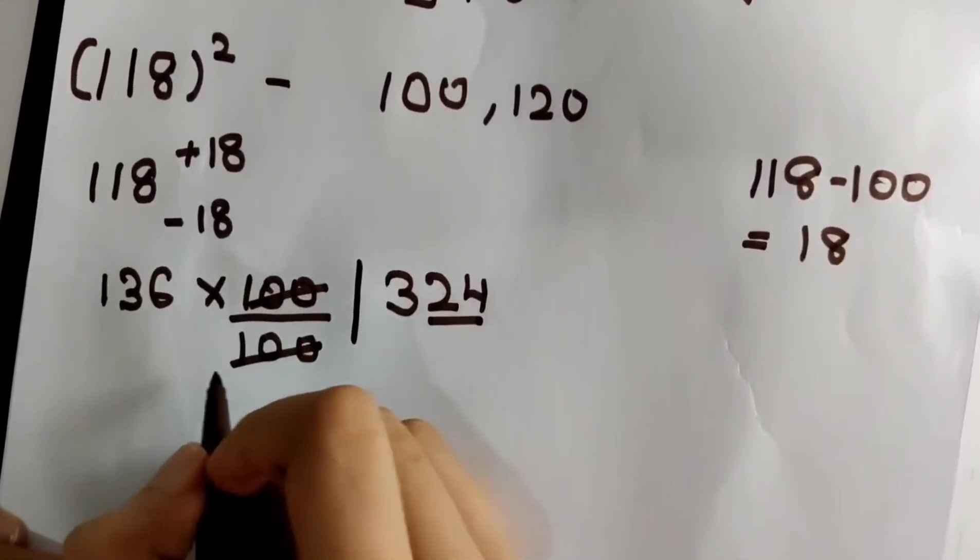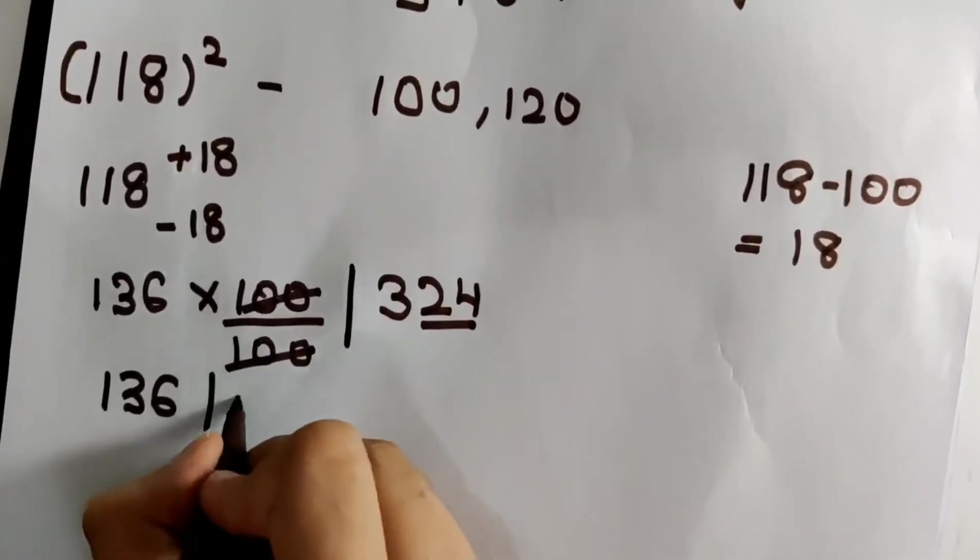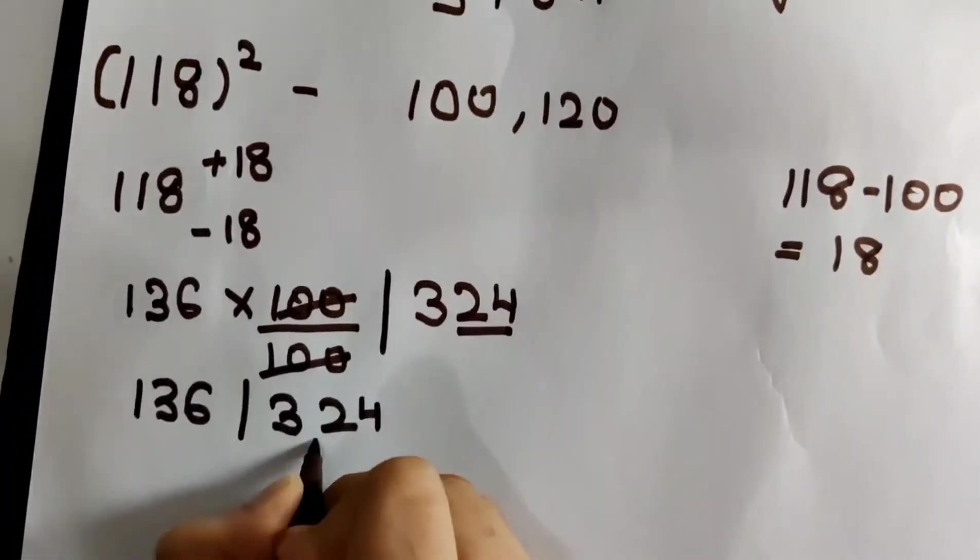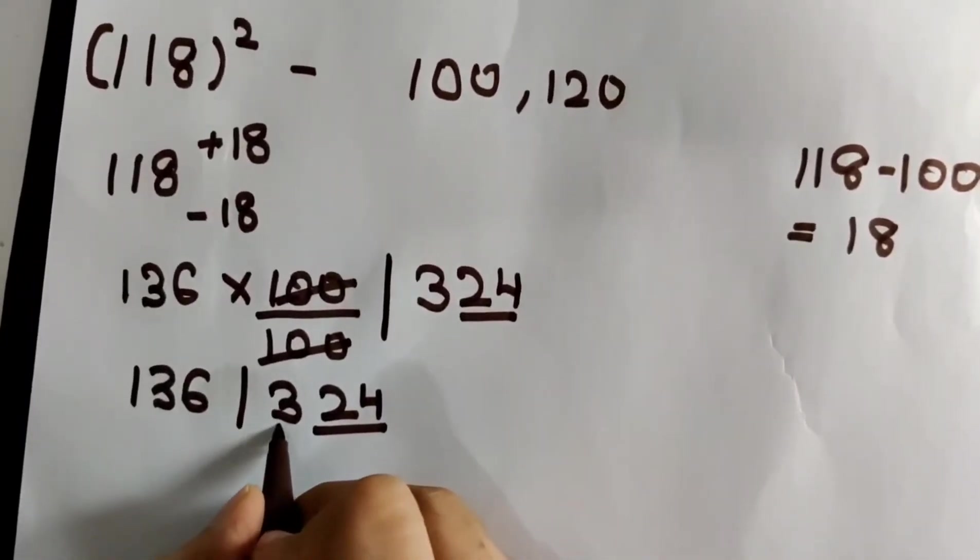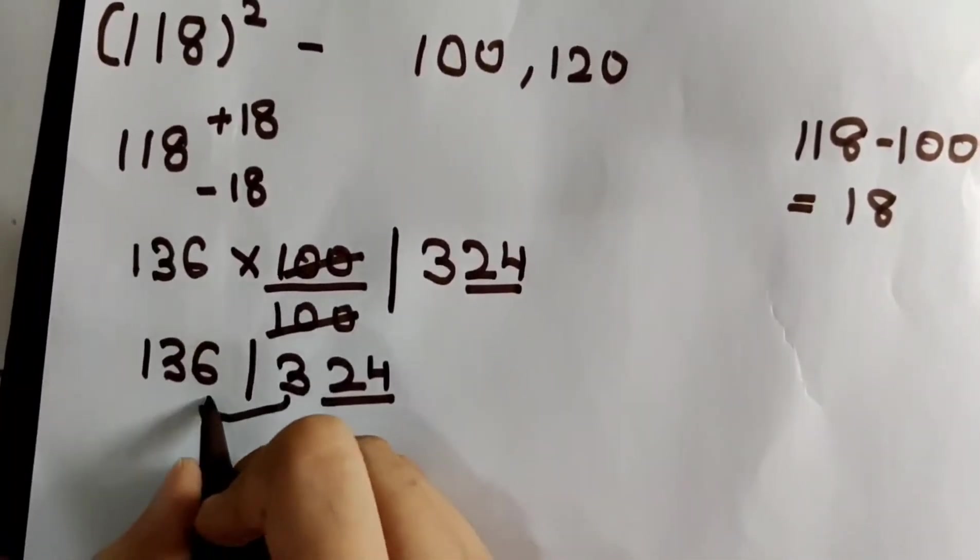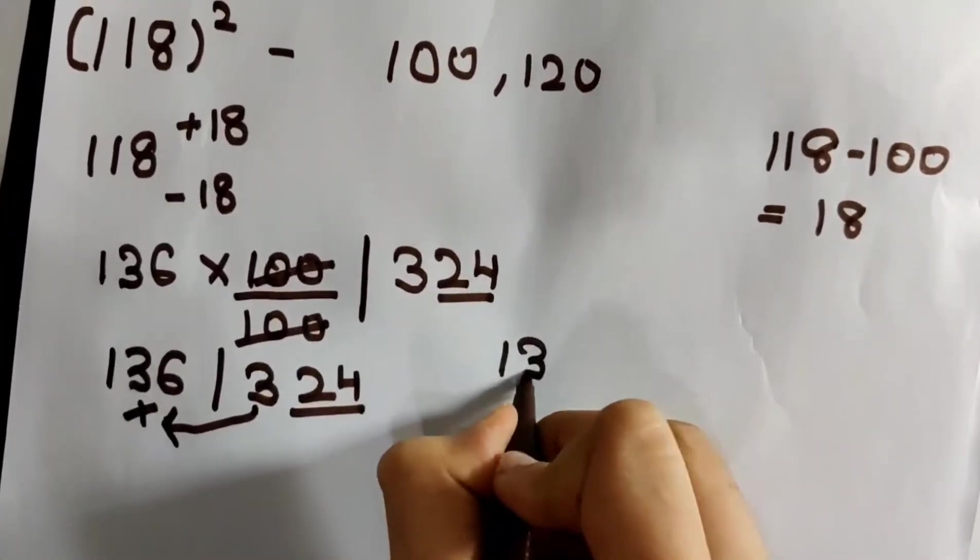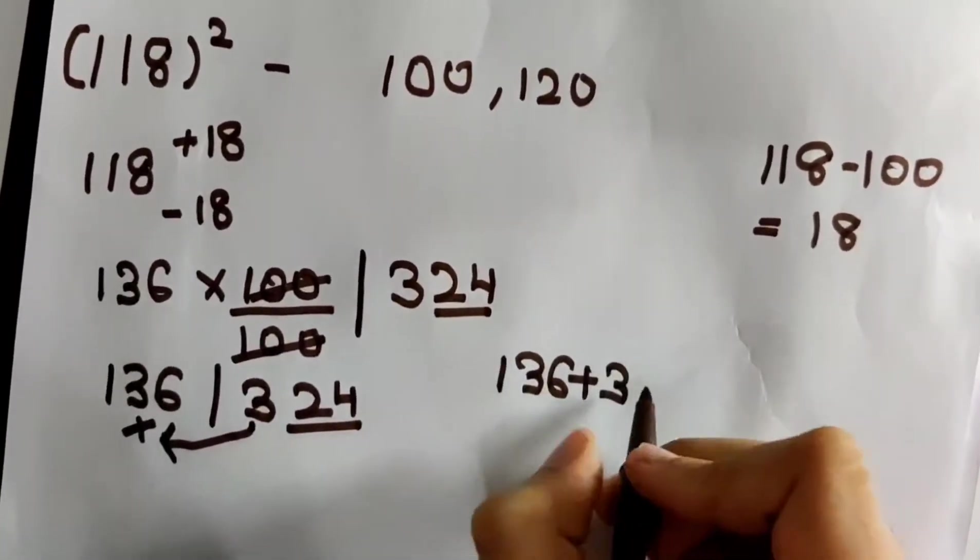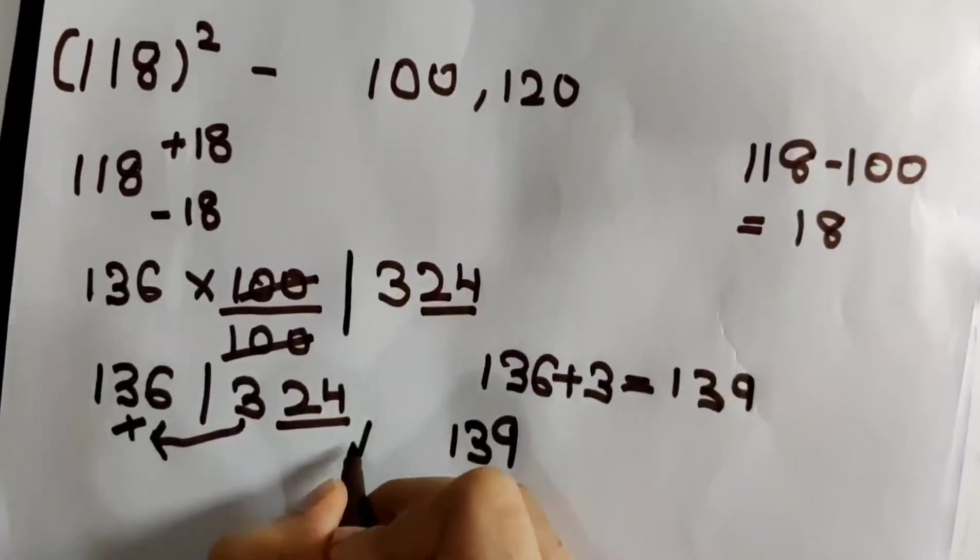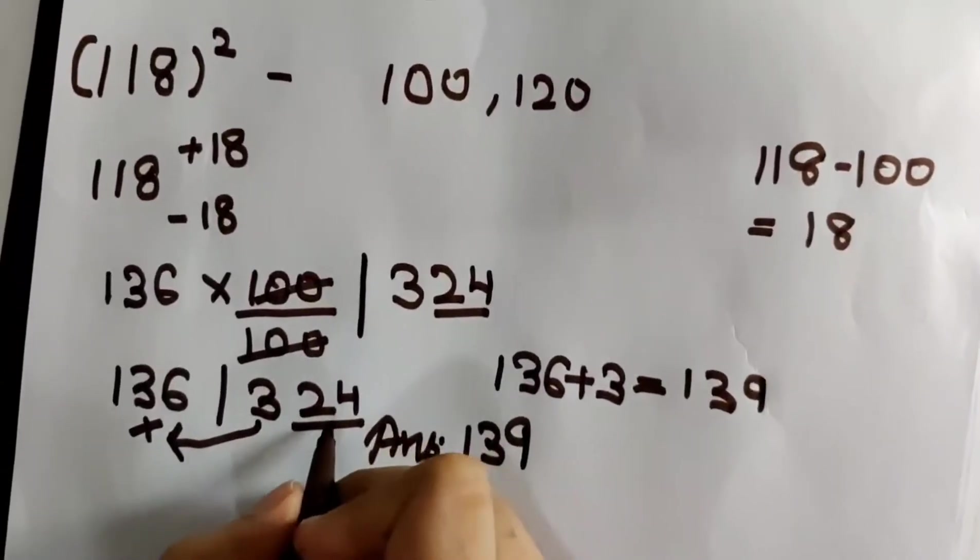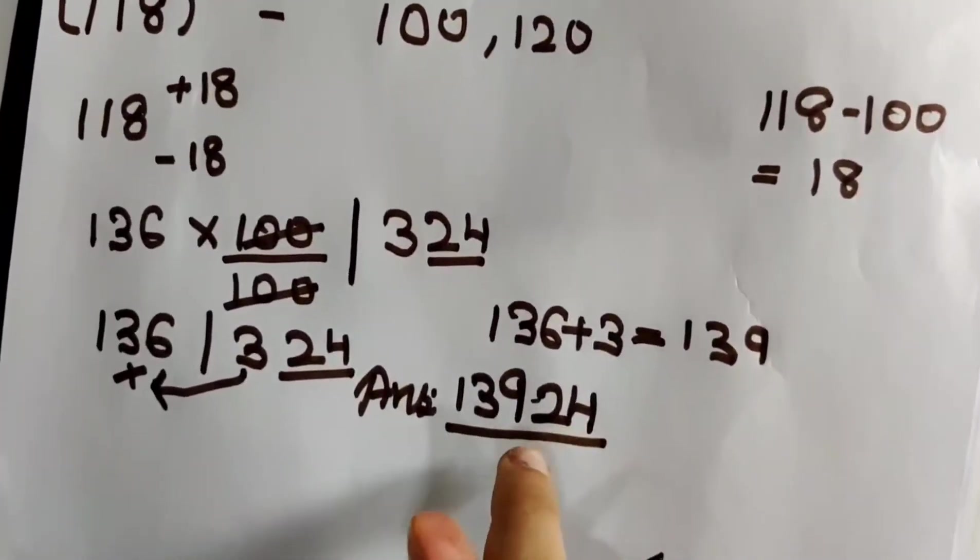Since 100 is cancelled by 100, what I get is nothing but 136 bar 3 and 24 that is blocked. Now this is my last step. The remaining number that is not blocked, I have to bring it to this side and add it with it. 136 plus 3 is 139. So what I have to do is write 139 here. And since 24 is blocked, I can write it directly as it is. Yes friends, 13924 is my answer.